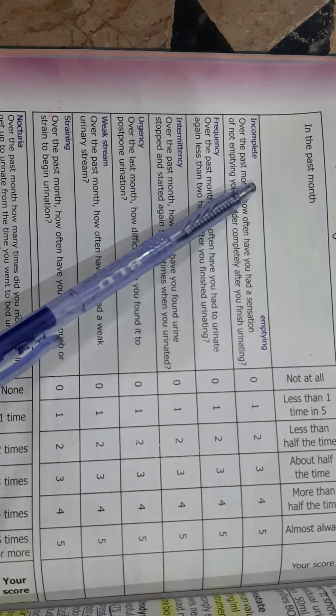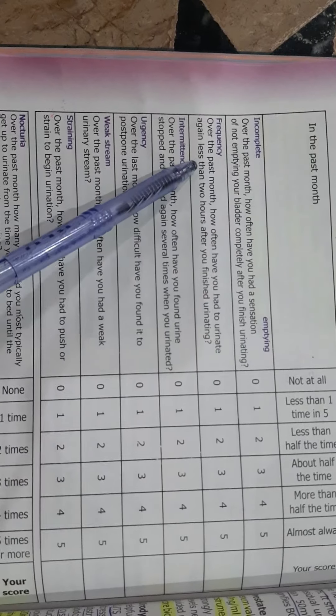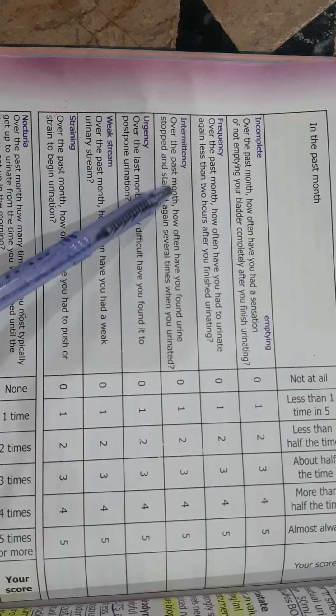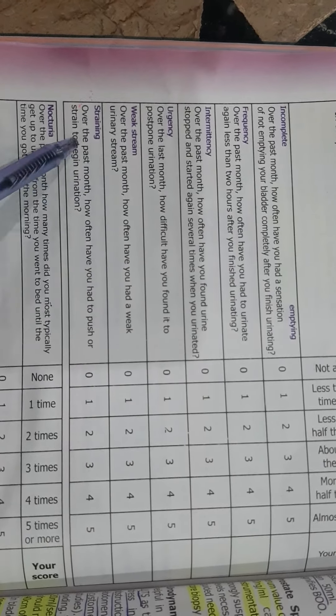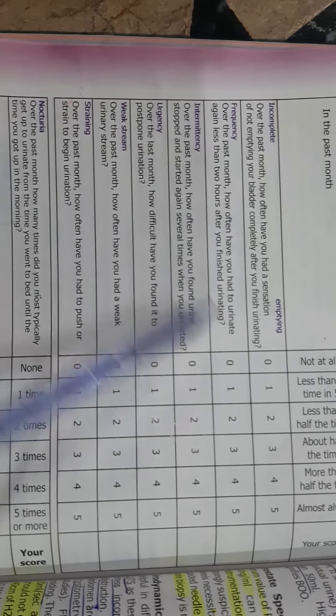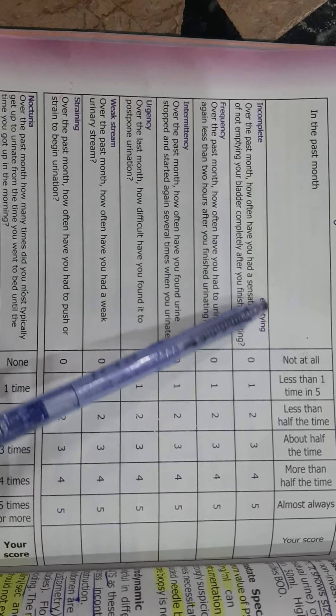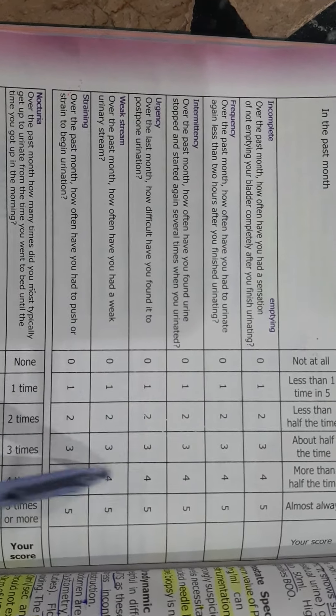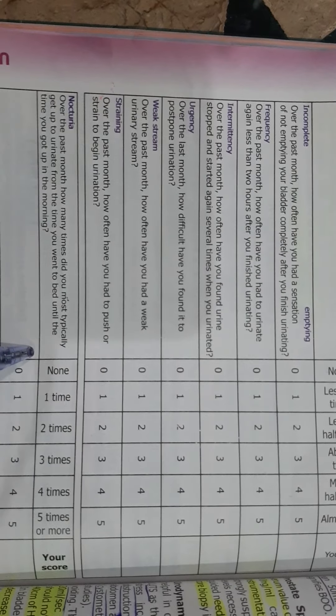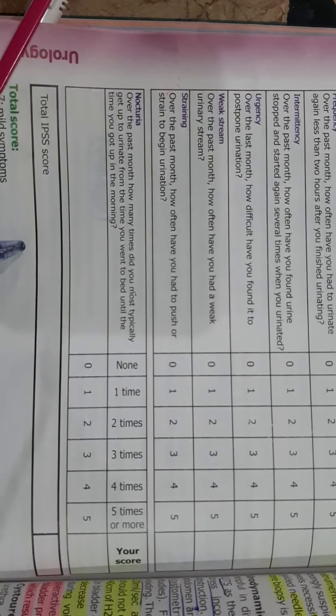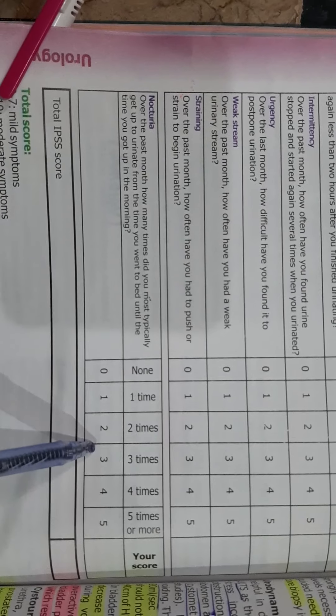The variables used are incomplete emptying, frequency, intermittency, urgency, weak stream, straining, and nocturia. The following scoring is used, and then total IPSS score is calculated.